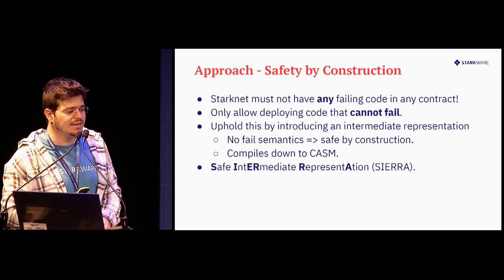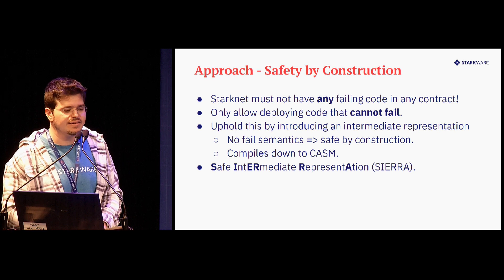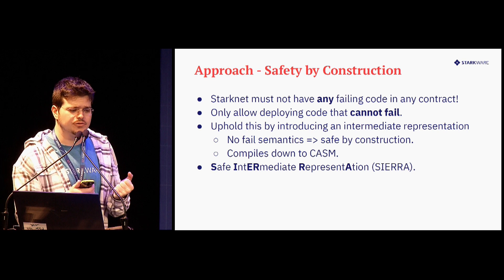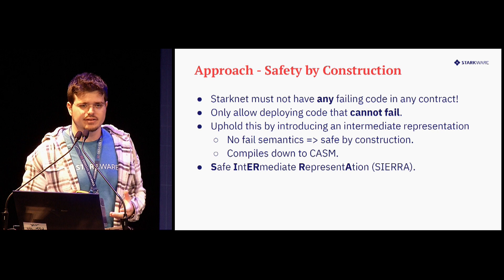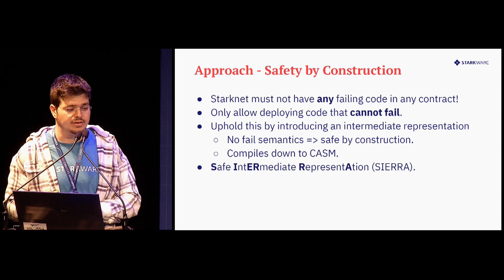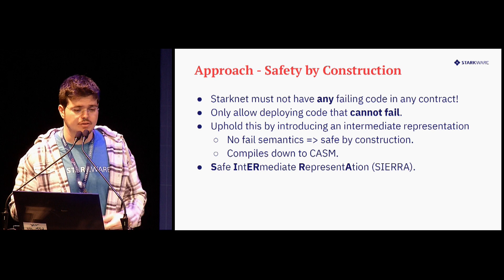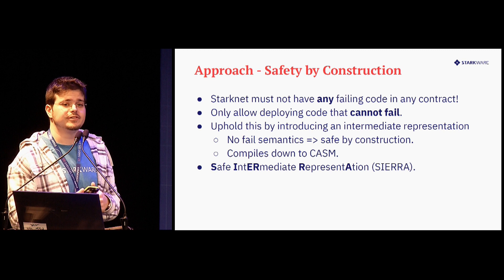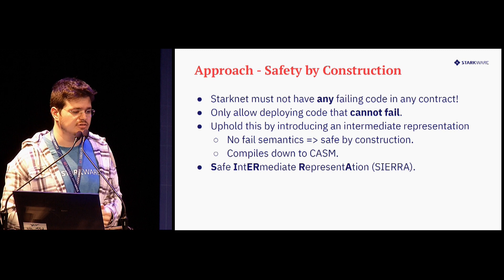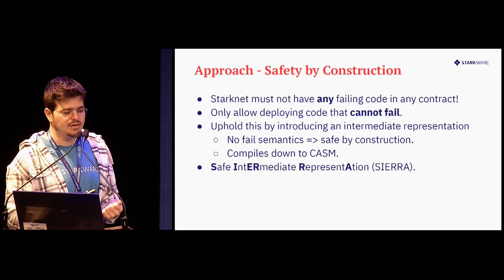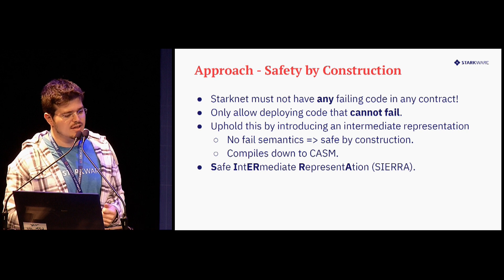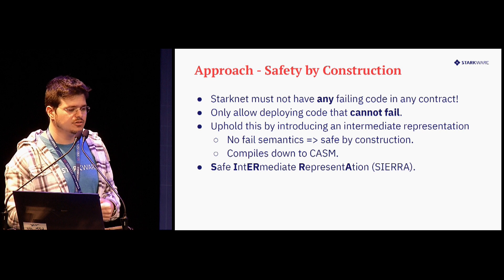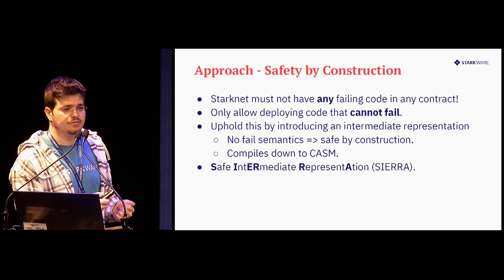Sierra — the idea is that it doesn't have any failing semantics inside. It's safe by construction: we only introduce things inside this representation that don't fail ever. This will later compile down to Casm, which means the generated Casm also can't fail ever by construction, because that's how we construct it from non-failing semantics. This is the idea to make sure nothing on StarkNet can fail.